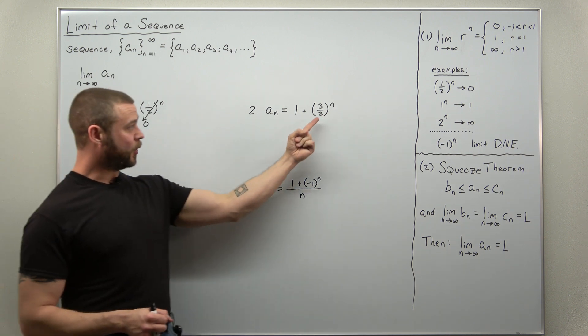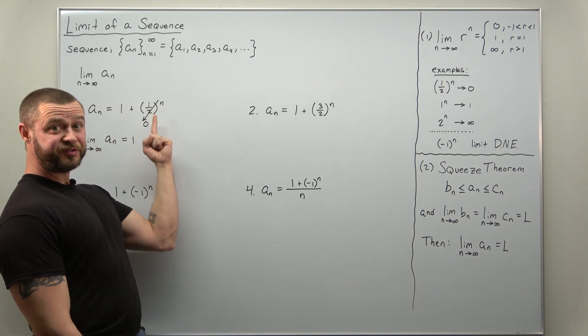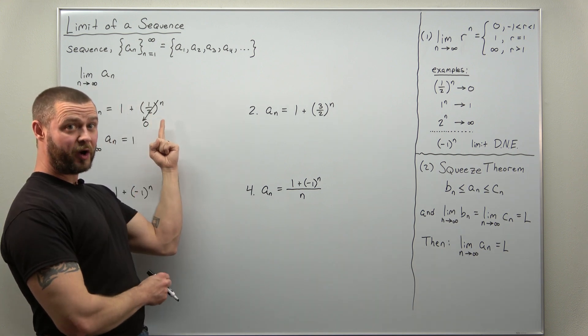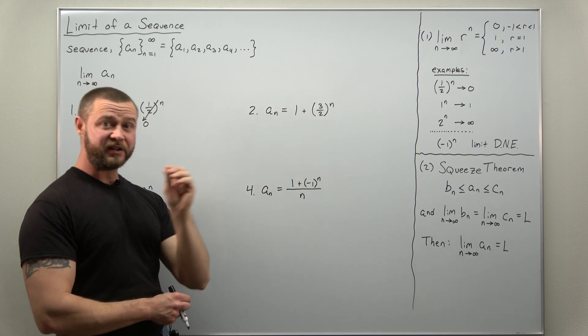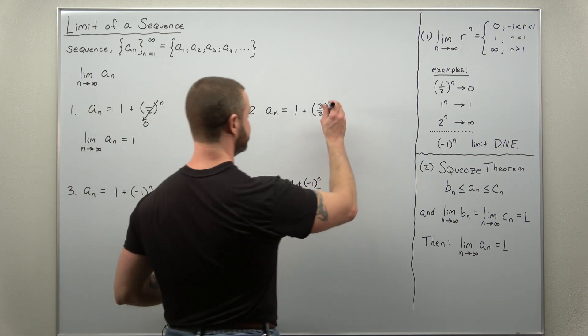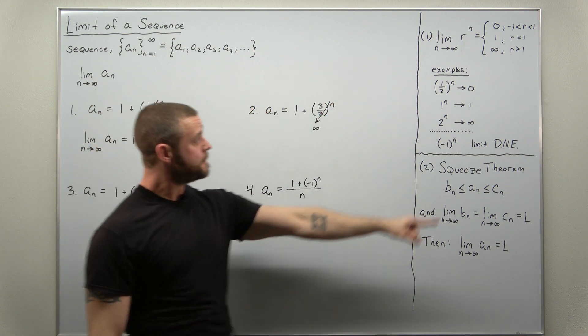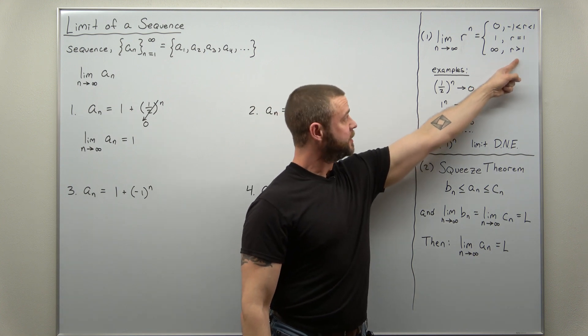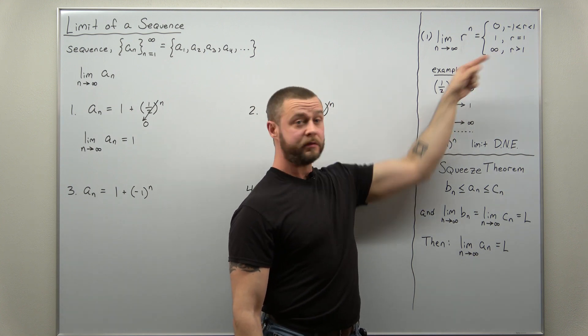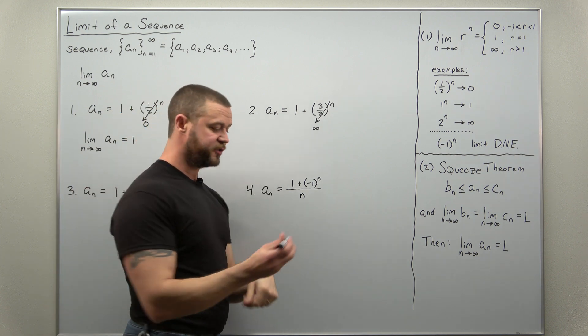Alright, if we take a look at the second one, well, you can probably see the pattern here. This was r equals a half, less than one. Now we have r as three halves. That is bigger than one. This term is going to get bigger towards infinity. That's your last possibility here. r is bigger than one. The limit approaches infinity. So we can say the whole limit here approaches infinity.